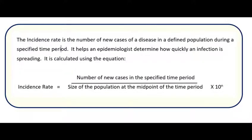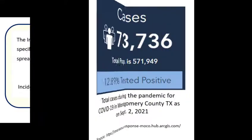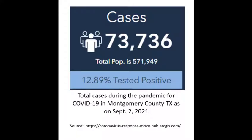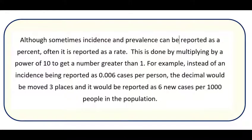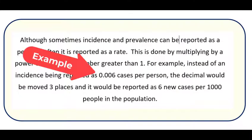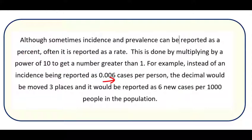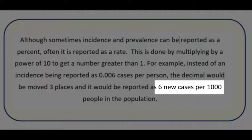Sometimes, incidence and prevalence is reported as a percent. For example, if you go to the Montgomery County COVID-19 website, it will give you the numbers as a percent of the county population. Most often, epidemiologists will report it as a rate. This is done by multiplying the answer by a power of 10 to get a number greater than 1. For example, instead of the incidence being reported as 0.006 cases, we would move the decimal place three places and report it as six new cases per 1,000 people in the population.